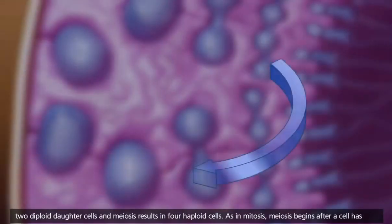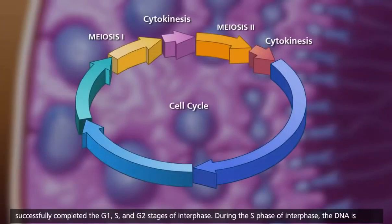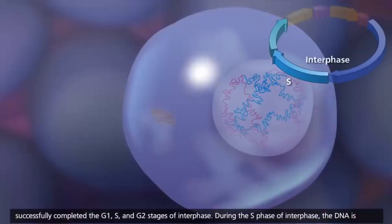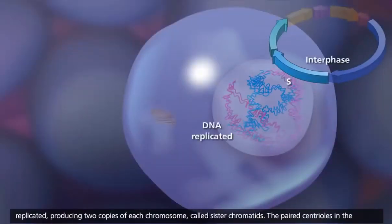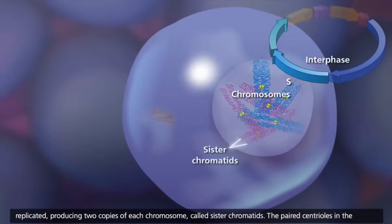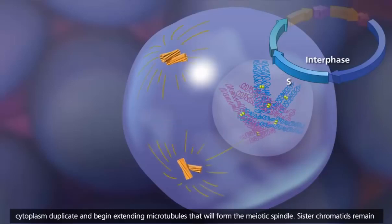As in mitosis, meiosis begins after a cell has successfully completed the G1, S, and G2 stages of interphase. During the S phase of interphase, the DNA is replicated, producing two copies of each chromosome called sister chromatids. The paired centrioles in the cytoplasm duplicate and begin extending microtubules that will form the meiotic spindle.